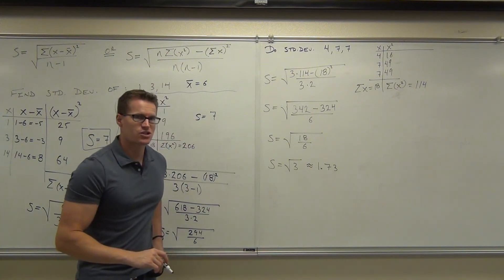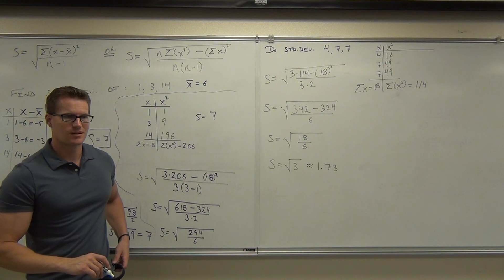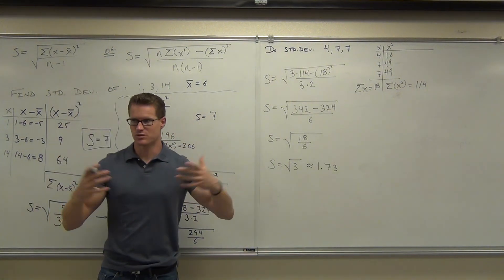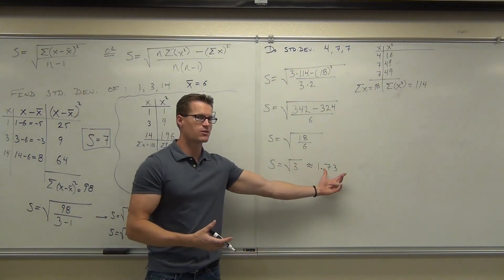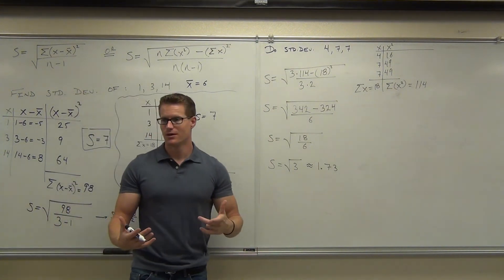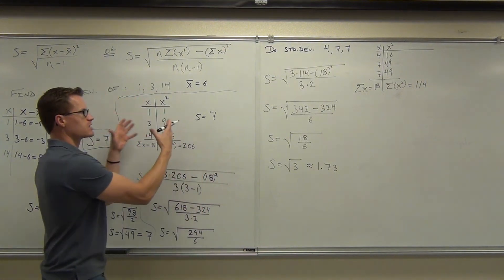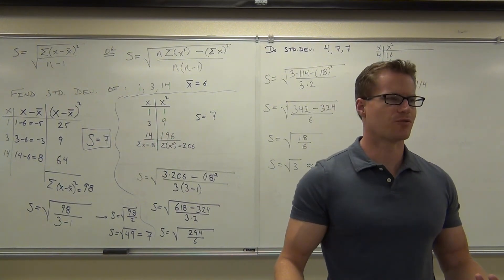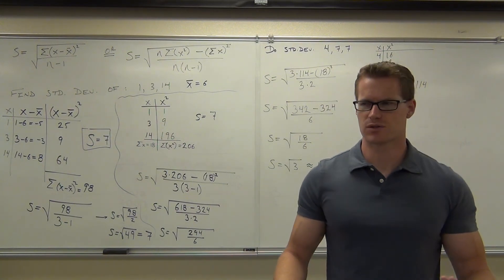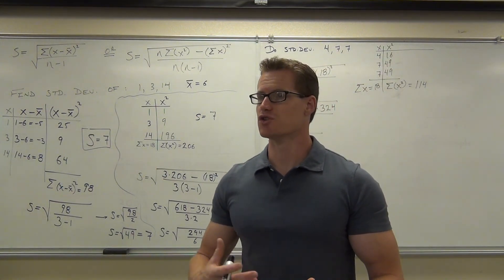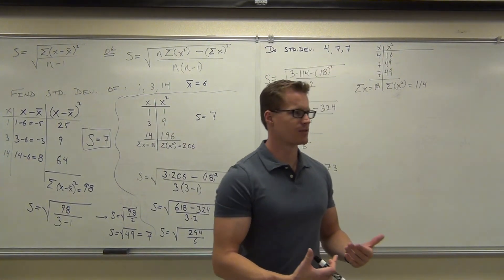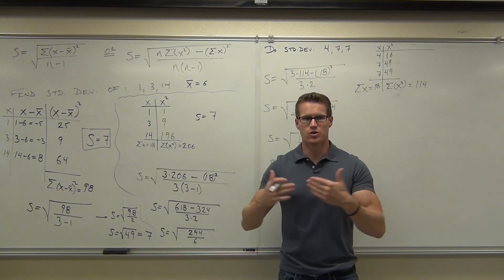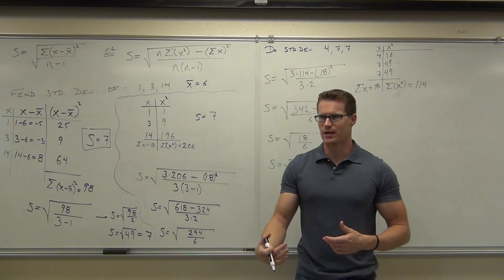Is there a difference in the standard deviation? Yeah — even though we have the same mean, the standard deviation is drastically different like we thought. This one is going to be bigger — it has a much bigger spread. This one's only 1.73, this one's 7. That's a significantly bigger standard deviation, which means this data is much more spread out. Of course we can see that just by looking at it: 4, 7, 7 are all pretty close; 1, 3, 14 are pretty spread apart. The range would tell us that, but it doesn't give us a numerical quantity we can actually calculate and manipulate — and this method does.